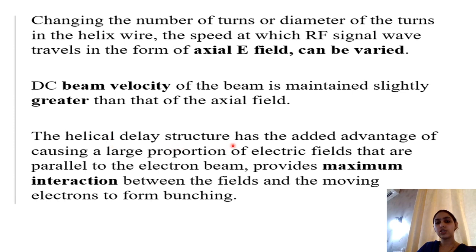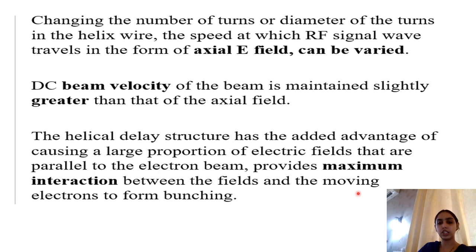The helical delay structure has the added advantage of causing a large proportion of electric fields that are parallel to the electron beam. In addition, it produces an axial electric field that interacts with the electron beam along the whole length of the tube, so maximum amplification takes place by means of bunching — the moving electrons interact with the RF field and form the bunching process.